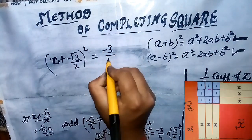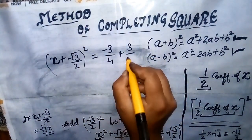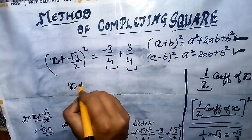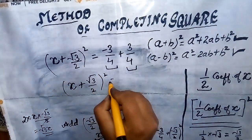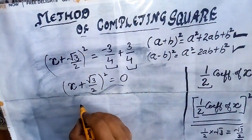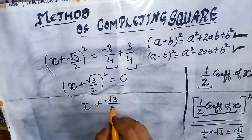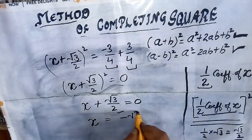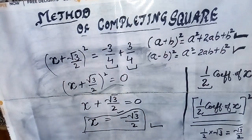The right side will be -3/4 + (√3/2)². Now (√3)² = 3 and 2² = 4, so (√3/2)² = 3/4. On the right side, -3/4 + 3/4 = 0. So (x + √3/2)² = 0. Taking the square root of both sides gives x + √3/2 = 0, so x = -√3/2. The equation has equal roots, both equal to -√3/2.